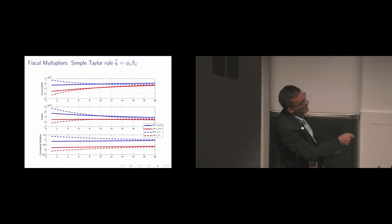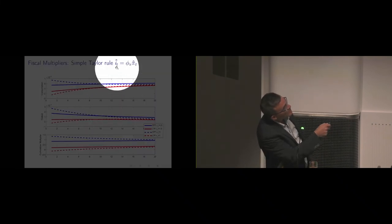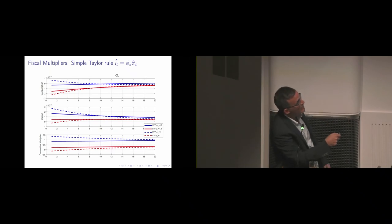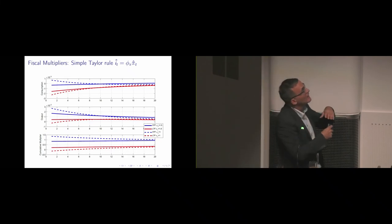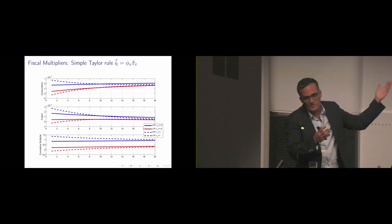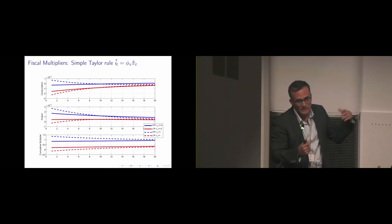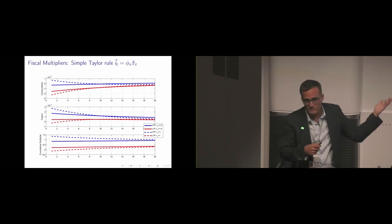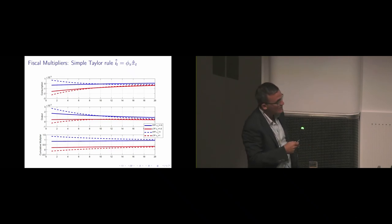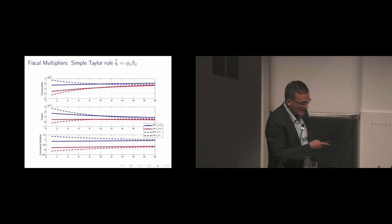Short-term finance shocks are displayed here with the blue lines and long-term finance shocks are the red lines. These graphs assume that monetary policy follows this very simplistic inflation targeting rule and we vary this coefficient. You can see that following a spending shock, output increases more when you finance short-term. Under long-term finance you get strikingly a lot more crowding out.